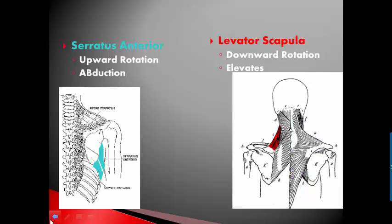Serratus anterior comes underneath the scapula into the anterior part of your ribs. If you look at some people who are really lean, it has a serrated edge — that's where the name serratus anterior came from. Serratus anterior pulls the bottom part of the scapula forward into upward rotation, and it pulls the scapula away from the midline into abduction.